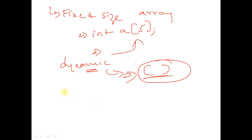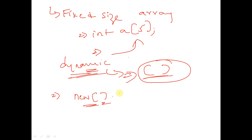The representation for dynamic arrays is: data type followed by the array name followed by empty square brackets — we will not mention any size before compile time. During runtime we will give the size of the array. In fixed size arrays, if we declare int a[5] we can only allocate five elements, but in dynamic arrays we don't mention the size at declaration time. We allocate size during runtime using the new operator.